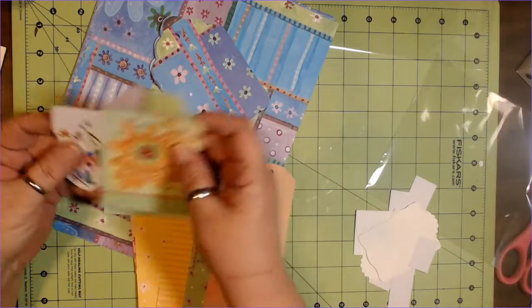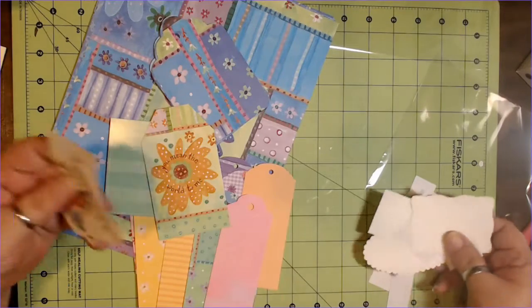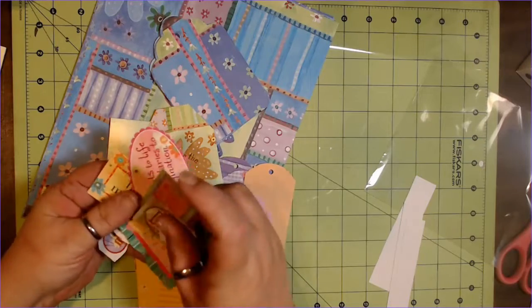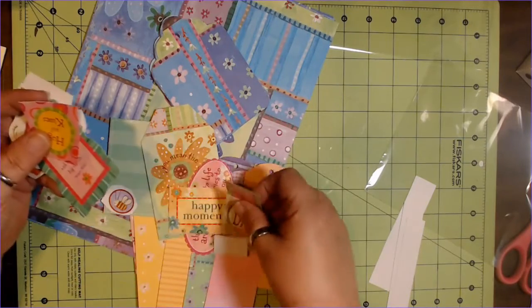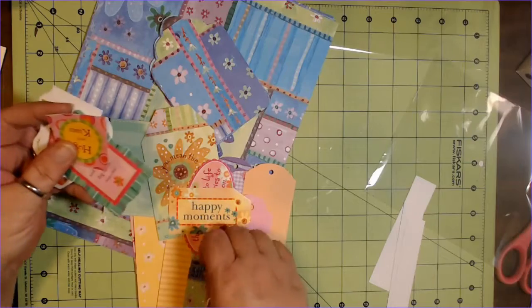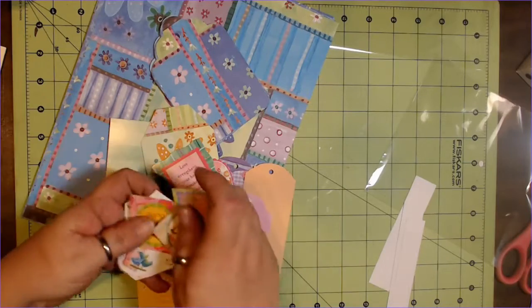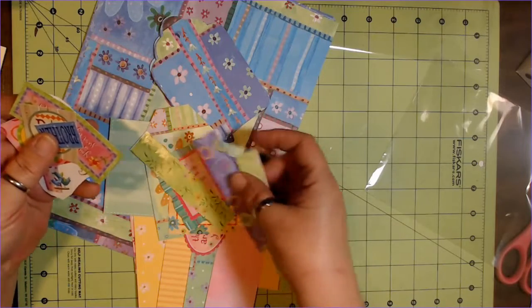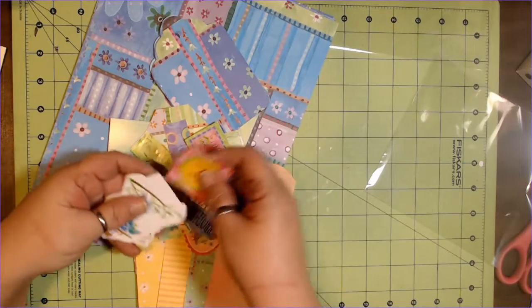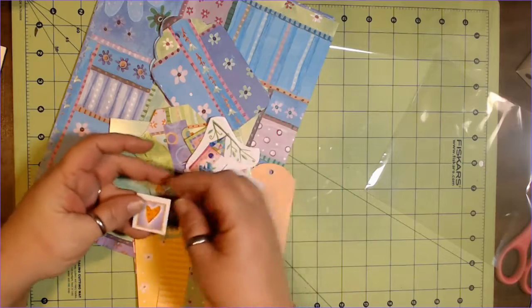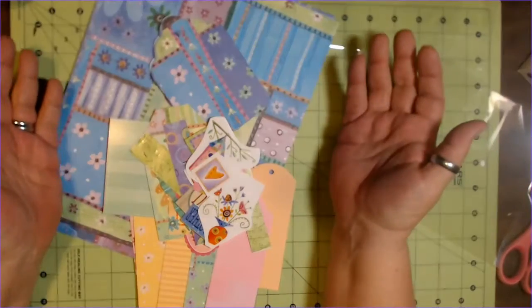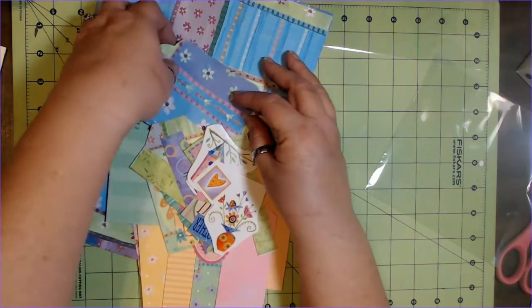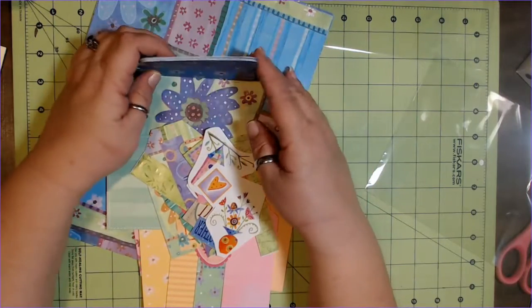So then you're going to get some ephemera pieces. These are all like die cuts that all coordinate with the paper. And then you're going to get some stickers and more stickers and more stickers because we all know that BMO loves stickers. So you get 12 sheets of paper and then including tags and everything else, you'll get between 40 and 45 pieces.